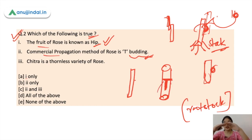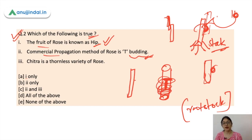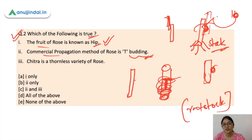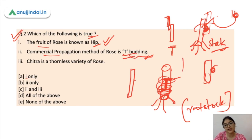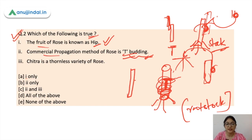You insert the bud into the T-cut and then wrap it with plastic. After 2–3 weeks, you will see a new stem forming and root formation occurring. In T budding, the cut is in T formation — a vertical cut and then a horizontal cut — and you insert the bud from the other plant into it. This is the tea budding method.